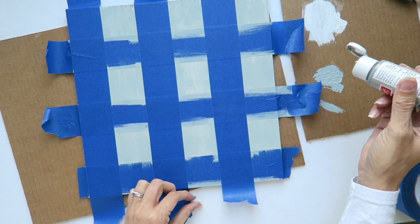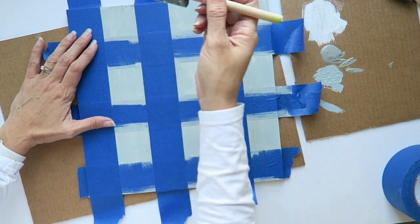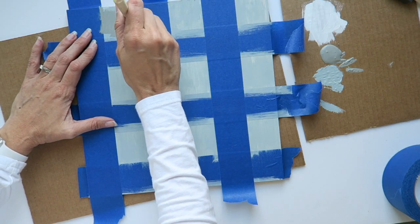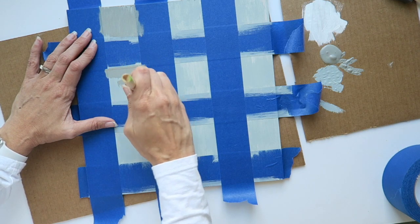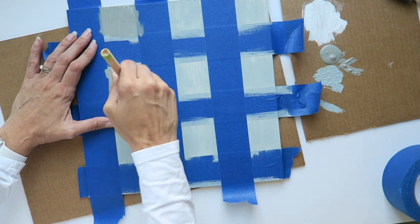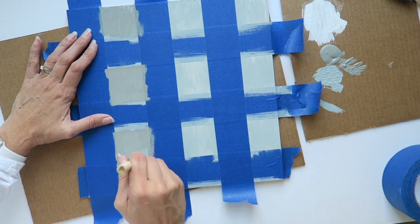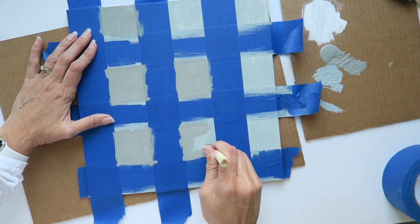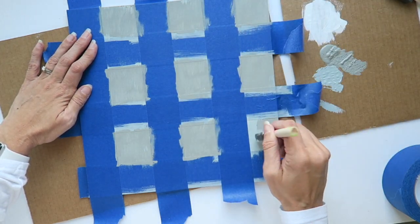Now you are going to use the darkest color in your buffalo plaid pattern. You are going to paint the squares that are still exposed. Again, use a dabbing motion on the edges of the tape to help it not bleed through. If you are going for a full coverage look, you might want to use a couple of coats. If you're going for more of a rustic look, you can leave some parts showing through.